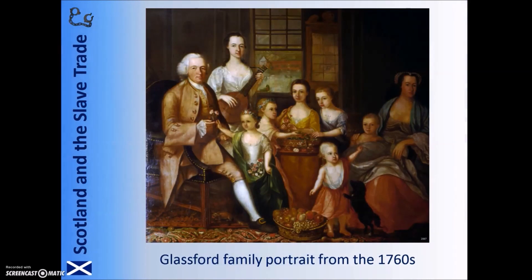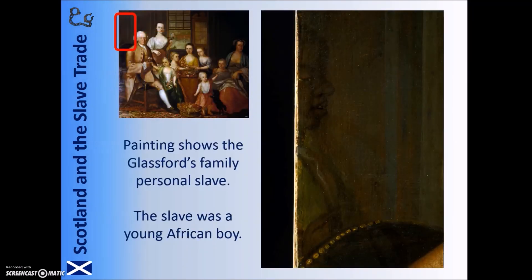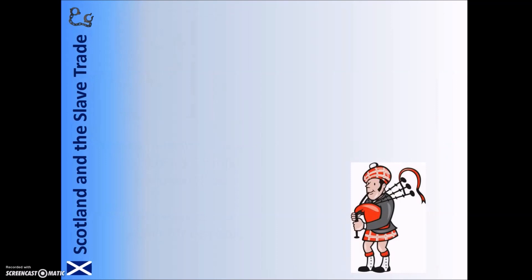In amongst Glasgow Museum's many collections of art, there's a family portrait from the 1760s. It shows a well-off group with both parents and children. But that's not actually the full picture. In the background, almost invisible from view, is another figure. This was the Glasfords family's personal slave — a young boy snatched from his life in Africa.